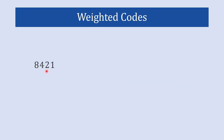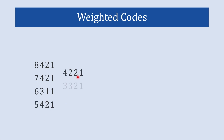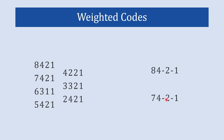Like the 8421 code, there are other weighted codes: 7421, 6311, 5421, 4221, 3321, 2421, 84-2-1, and 74-2-1. These are all examples of weighted codes.